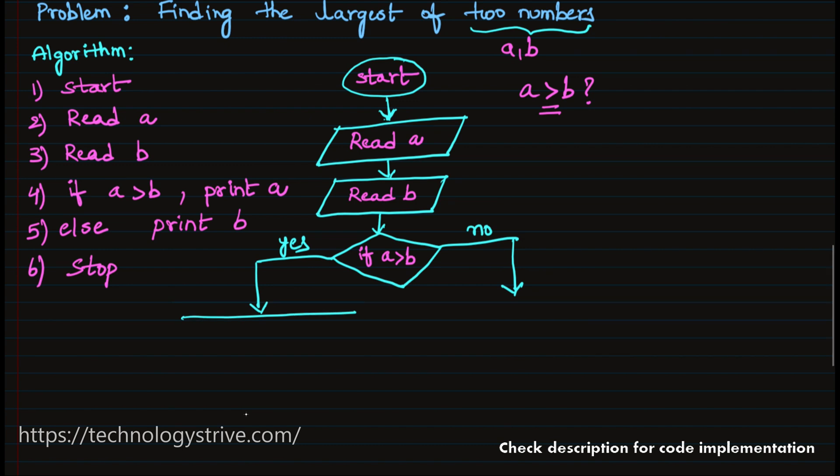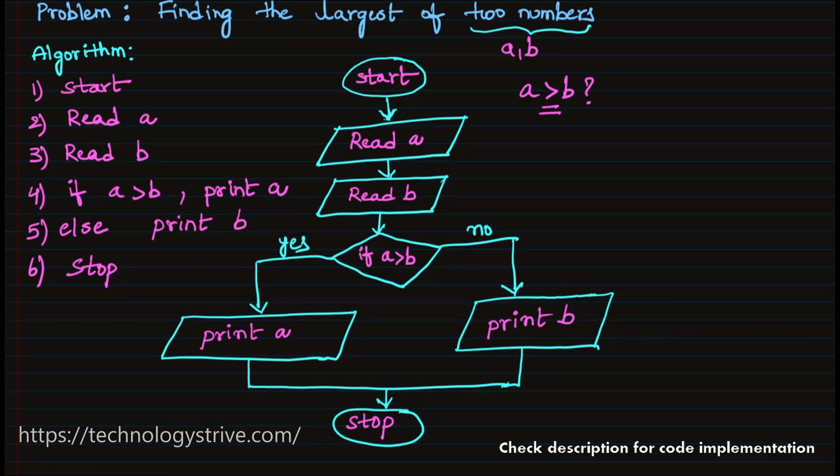So if it is yes, what have we done here? We have to print a. In case of no, we have to print b. Meaning print a and here print b. So finally we solved the problem. Means we are going to end the algorithm. This is how we are going to write the algorithm and convert it to a flowchart. Just by looking at this diagram, a programmer can convert it to coding.